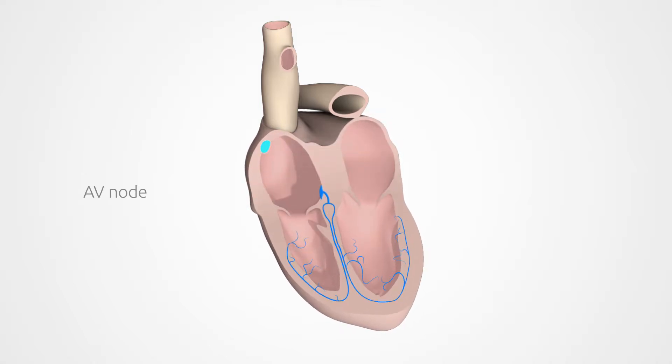In AV-Block, there are problems with the way these signals are passed on to the ventricles. Sometimes these are major problems and sometimes they are only minor.